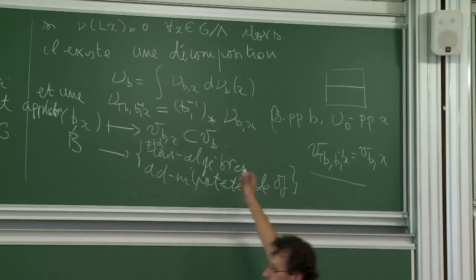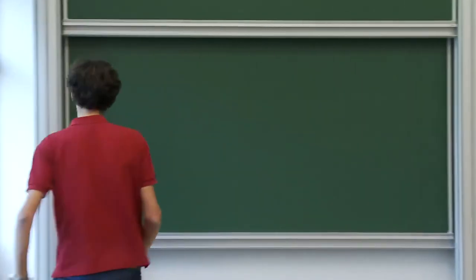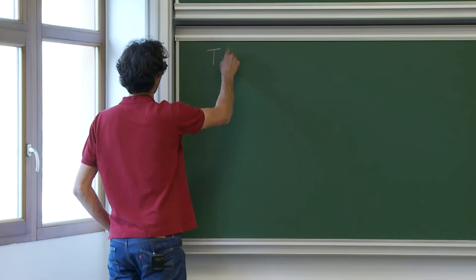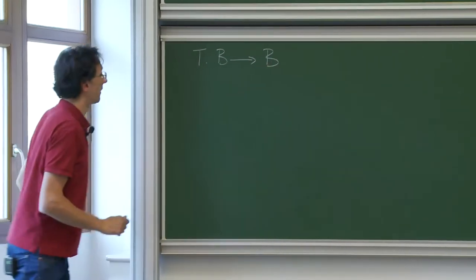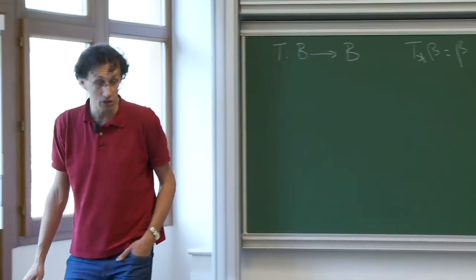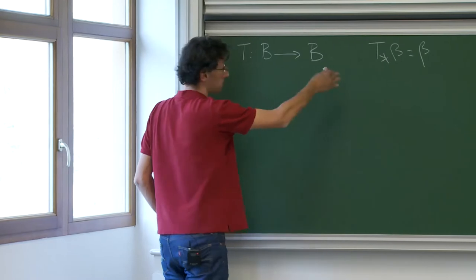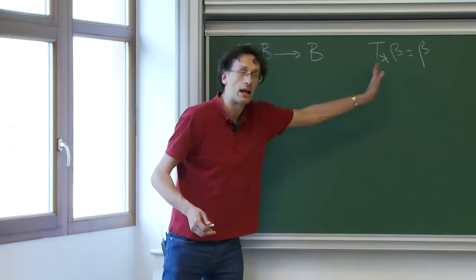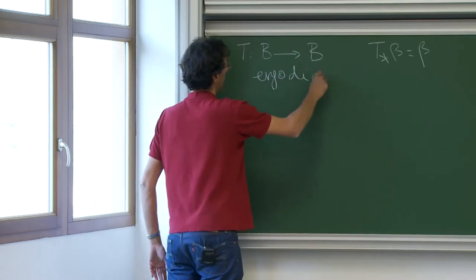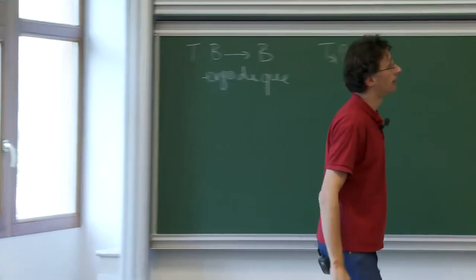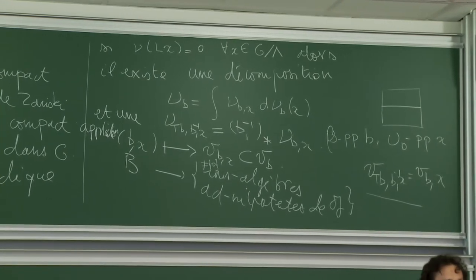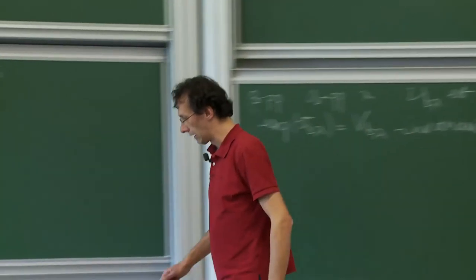I return briefly to these equivariance questions. There is a property I used very quickly last time — Emmanuel pointed it out — which I'll detail because we'll use it a lot today. The shift map T: B→B preserves the measure β, and with respect to this measure it is ergodic. This is always true: we have a countable product space, the shift preserves the product measure, and is always ergodic in this situation.